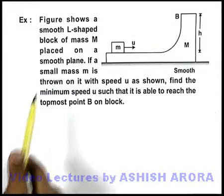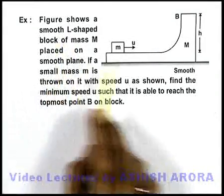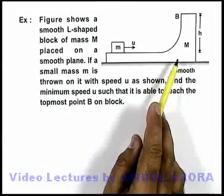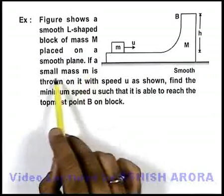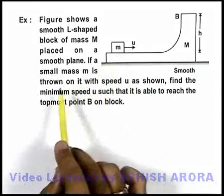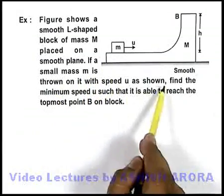This example says that figure shows a smooth L-shaped block of mass capital M placed on a smooth plane. If a small mass small m is thrown on it with a speed u as shown,